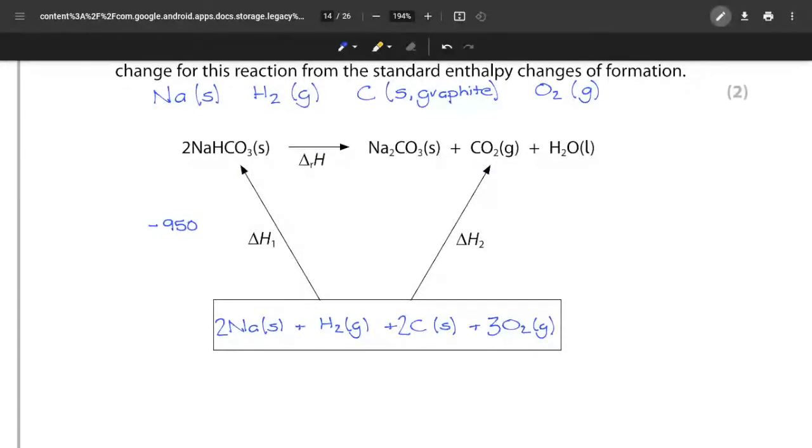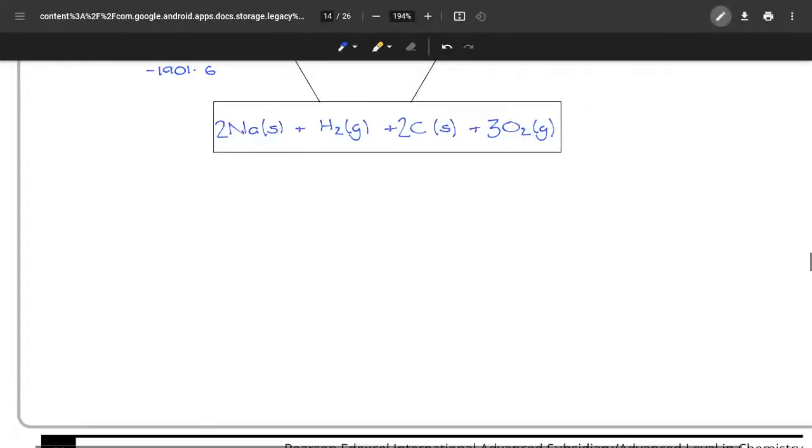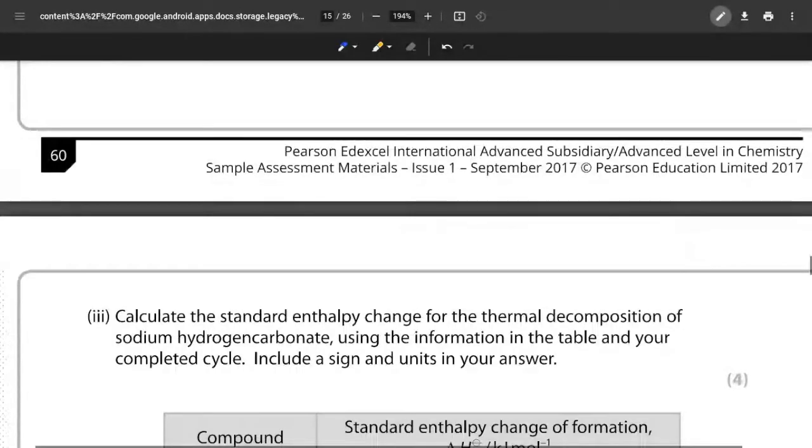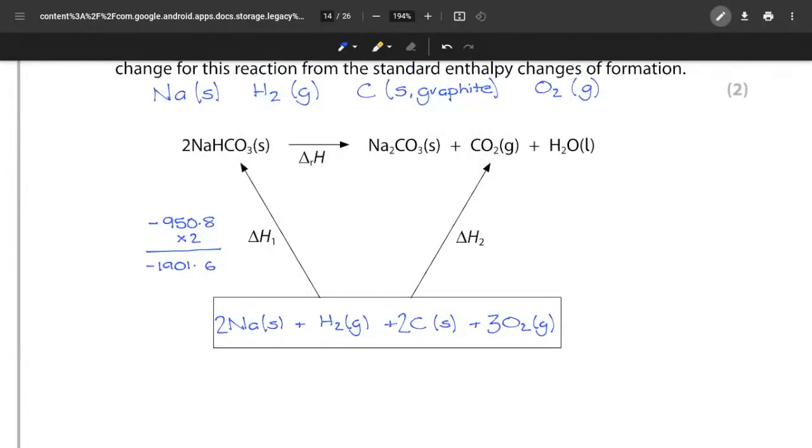My standard entropy change of formation for the sodium hydrogen carbonate is minus 950.8, so that is going to go on the left hand side. Minus 950.8, and because there are two of them for two moles, I have to multiply that by two which gives me a value of minus 1901.6 for my delta H1.